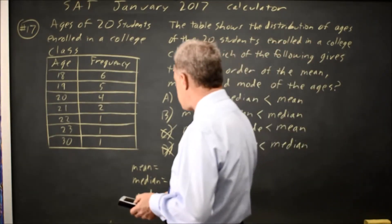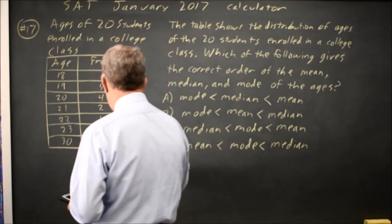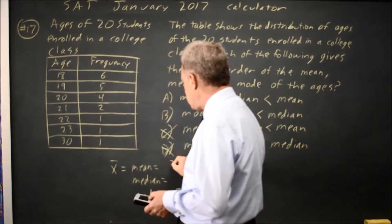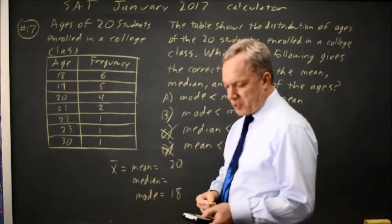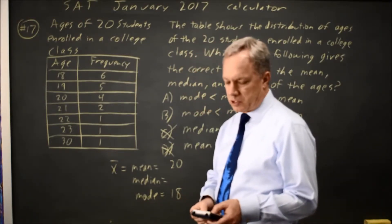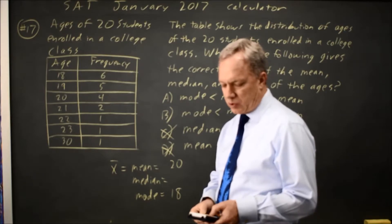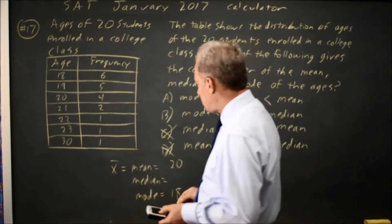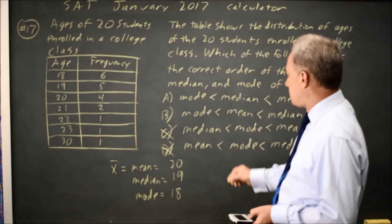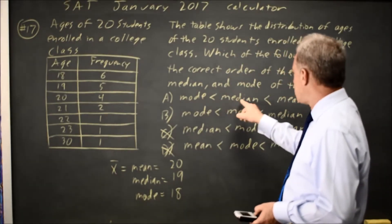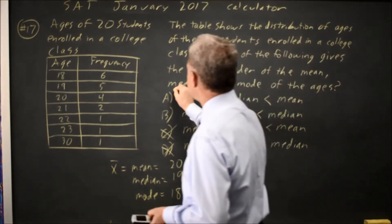I get X bar, which is the mean. You should know that symbol is 20. If I scroll down to the bottom, I have minimum, Q1 for the first quartile, median, Q3 for the third quartile, and maximum. The median is 19. So the mode is the smallest, the median is middle, and the mean is the largest, so it's choice A.